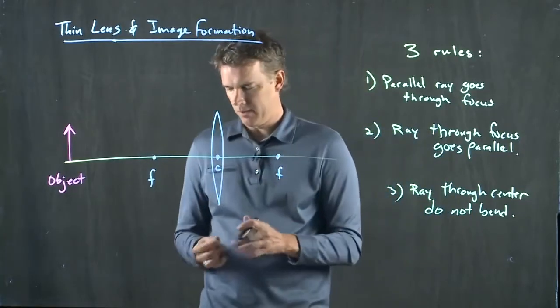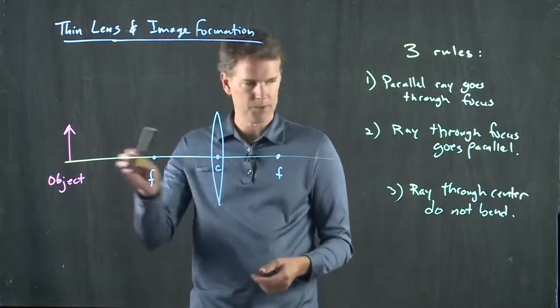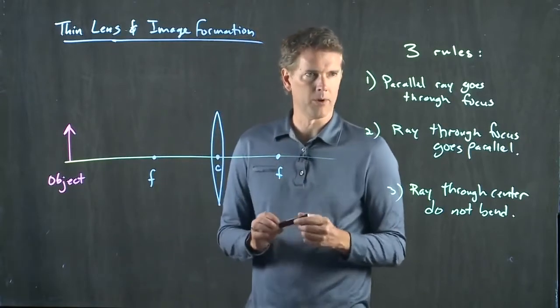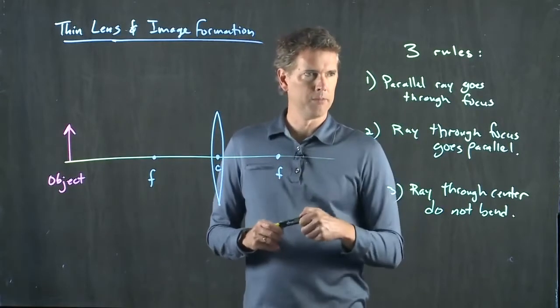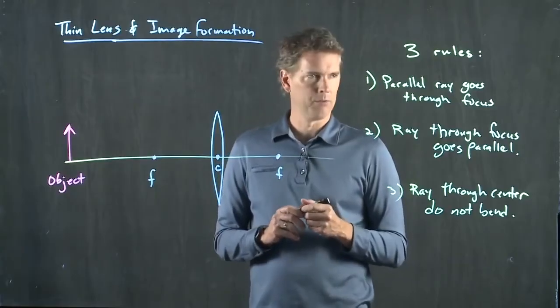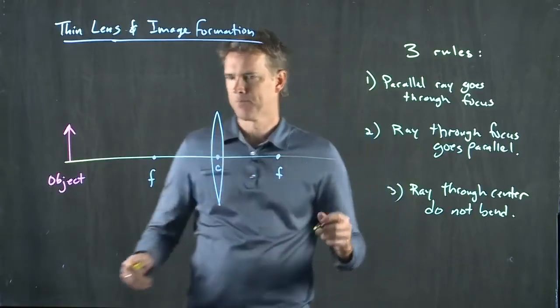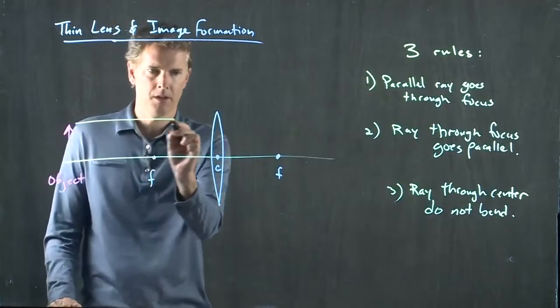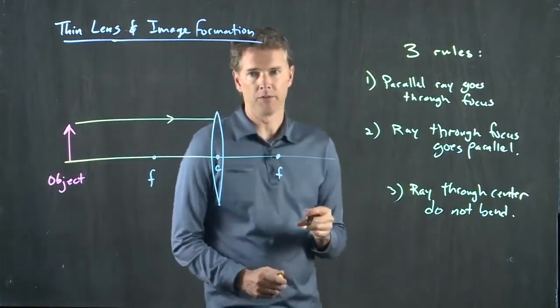So let's see how to do this. We've got our object. We need to draw some of these rays. The first one is parallel ray goes through the focus. Parallel ray comes in, it's going to go through the focus.